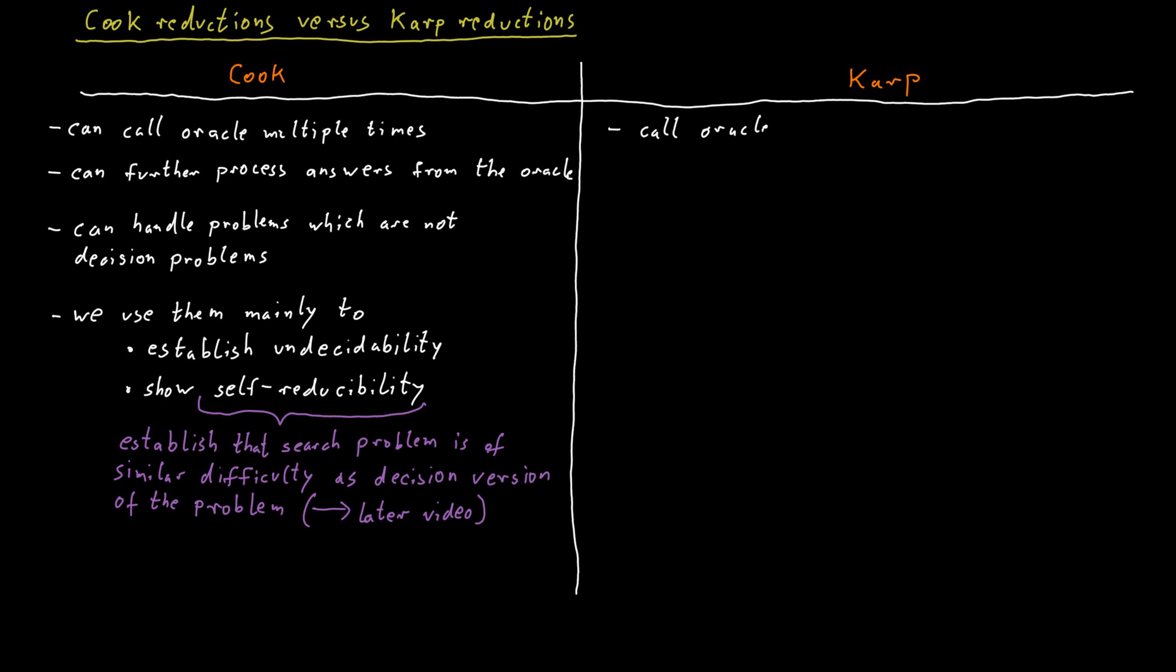Karp reductions can call the oracle only once. They cannot further process the answer from the oracle, but instead they need to just take the answer from the oracle and that is the answer that's given. And they cannot handle problems which are non-decision problems. They can only deal with decision problems or languages.